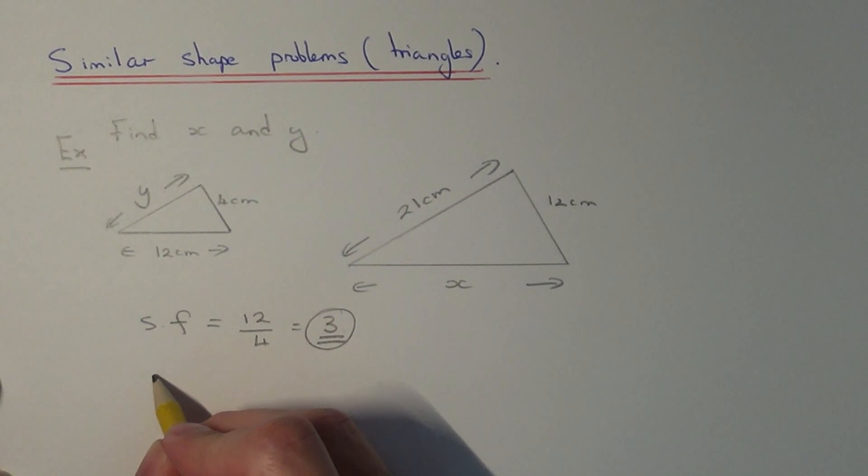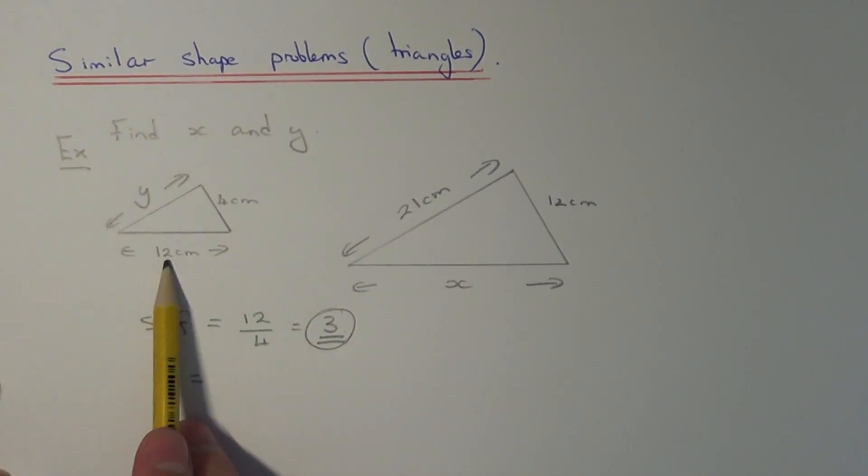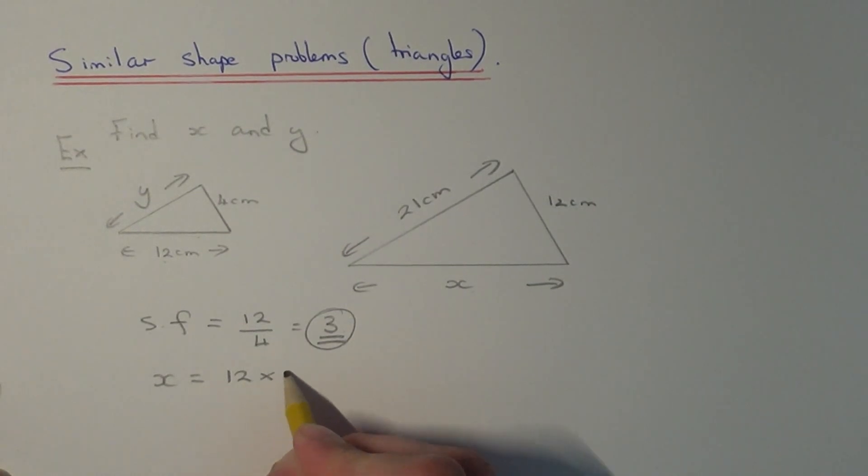So let me begin by working out side length x. So all I have to do to get side length x is multiply the 12 by 3. And 12 times 3 is 36 centimeters.